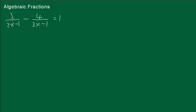We have this sort of problem. We've got a fraction there and a fraction there and it's algebraic. We've got to solve it for x. The first thing to do is find a common denominator. The easiest way to do that is multiply these two together. We're then making equivalent fractions.